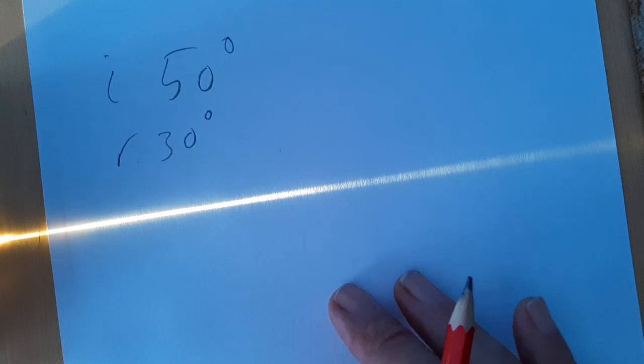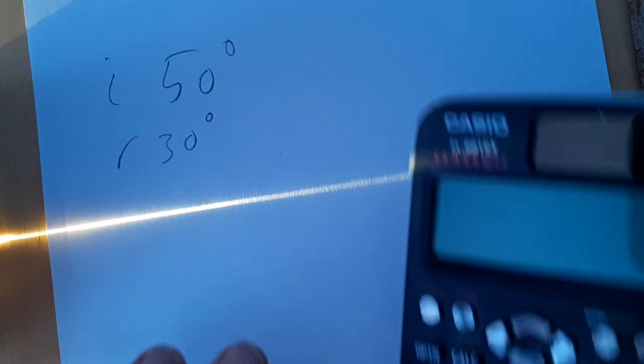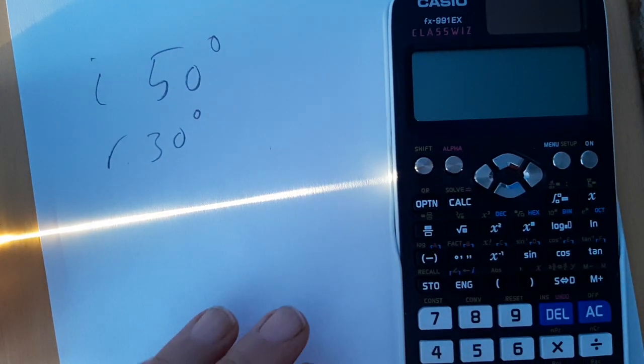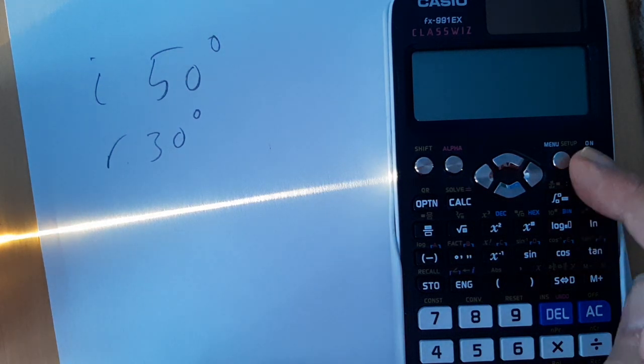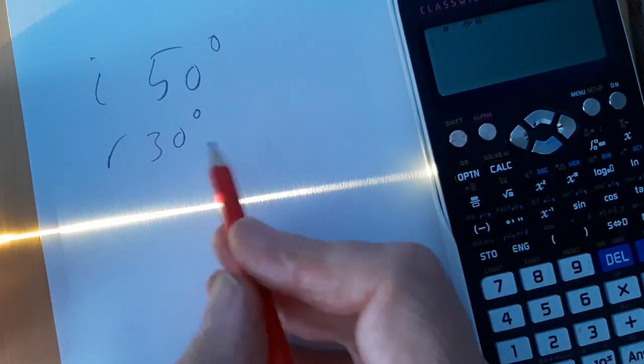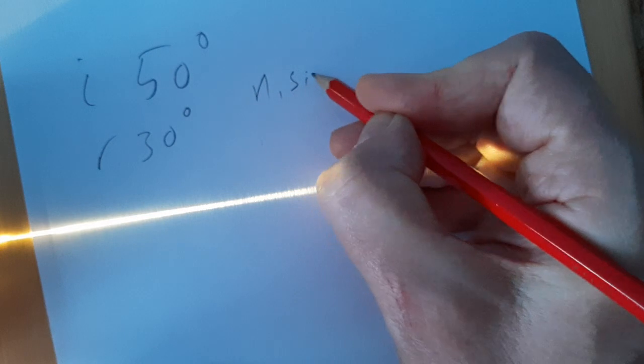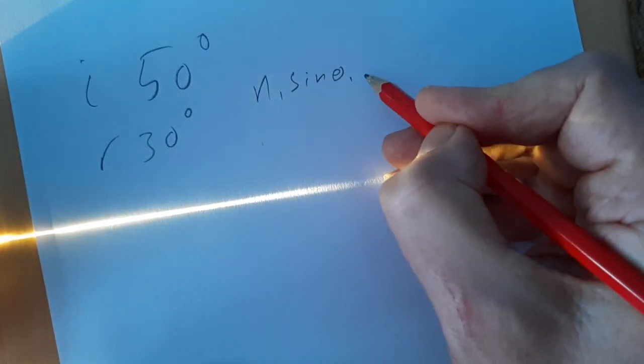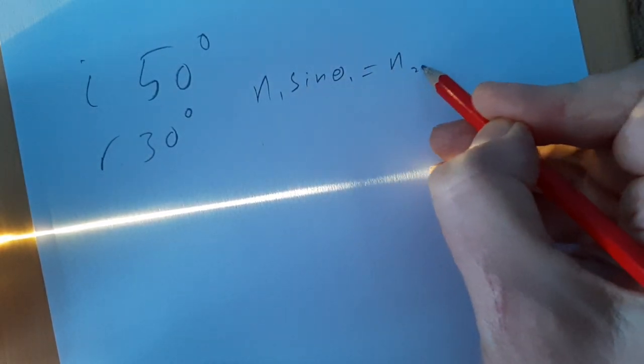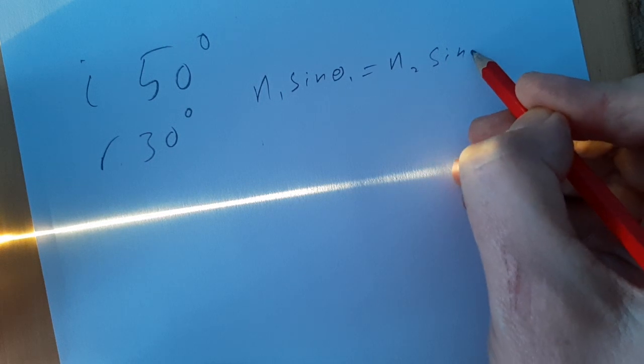So, there's some numbers. There's a calculator liberated from work. Thank you very much, Rick, for pointing me in the direction of that. So, we know the equation is, what we want to do here is work out the refractive index of that block. N₁ sin θ₁ equals N₂ sin θ₂.